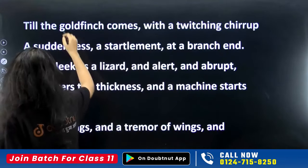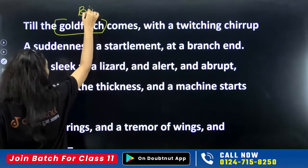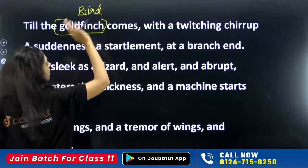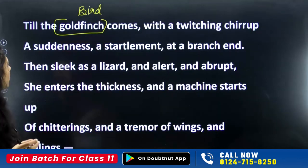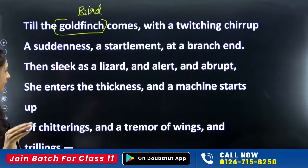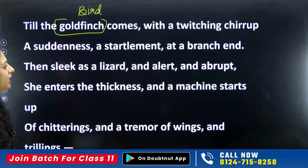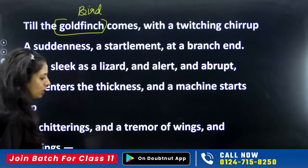This continues until the goldfinch comes. Goldfinch is the name of a bird. Everything was yellow and dead, the seeds had fallen — all this continues until the goldfinch arrives. With a twitching chirrup — a suddenness, a startlement at a branch end — then sleek as a lizard, alert and abrupt, she enters the thickness. And a machine starts up of chitterings and a tremor of wings and trillings.